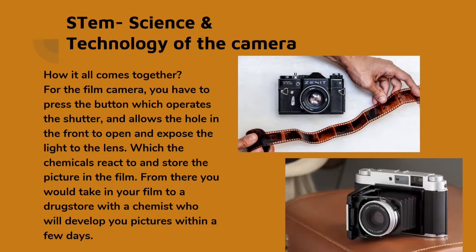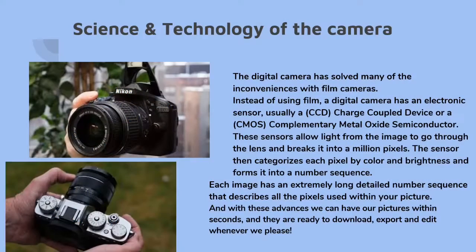For the film camera, you press the button which operates the shutter and allows the hole in front to open and expose light to the lens, which the chemicals react to and store the picture in the film. From there you would take your film to a drugstore with a chemist who would develop your pictures within a few days.